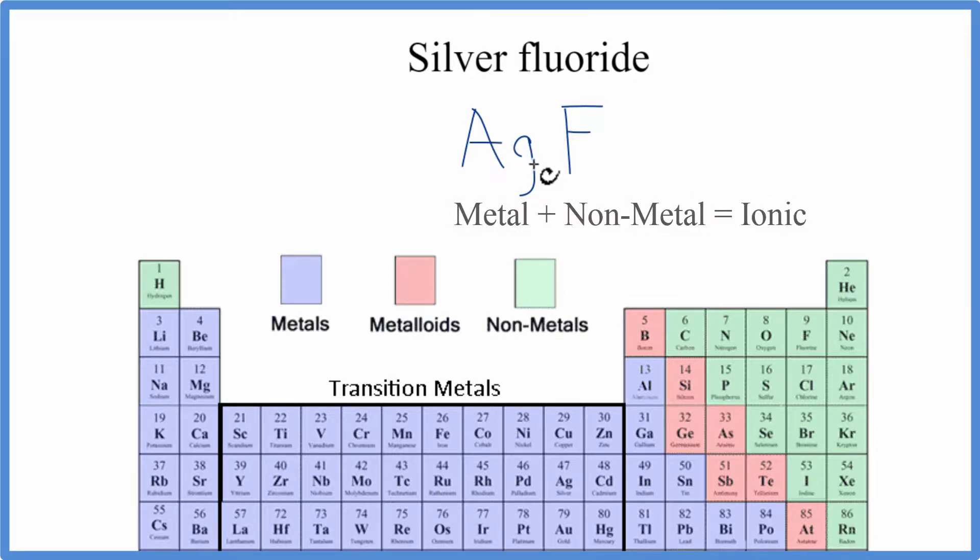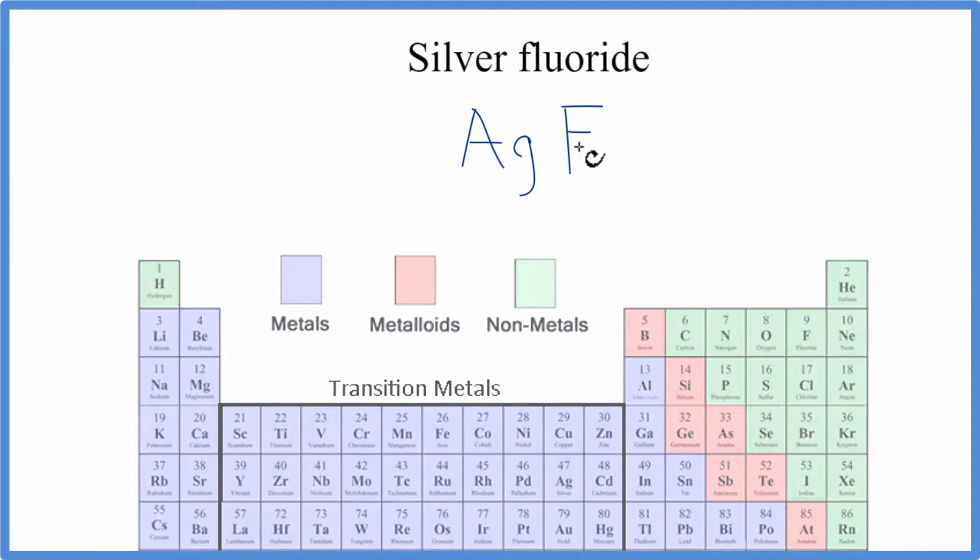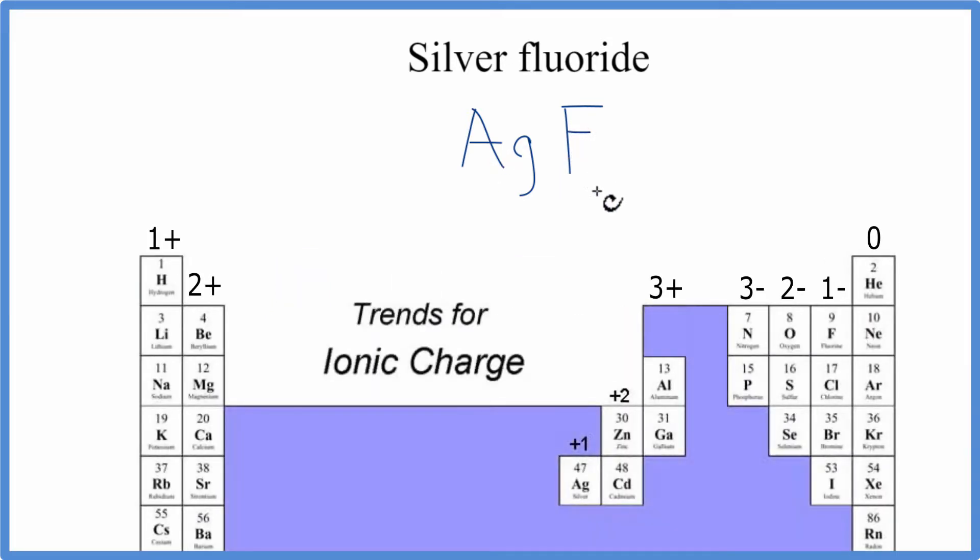And for ionic compounds, we need to consider the ionic charge when we write the formula. So we look at the periodic table again, and silver, it always has a plus one ionic charge. It's a bit of an exception. Transition metals usually have variable charges. But silver, always one plus.